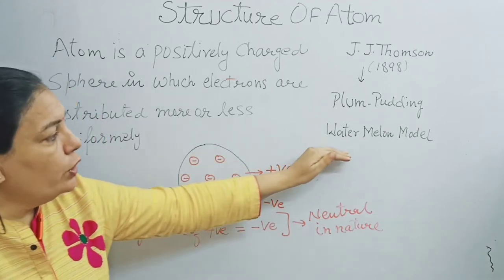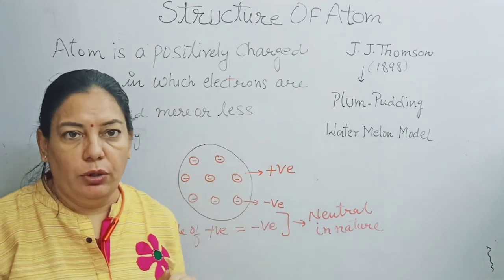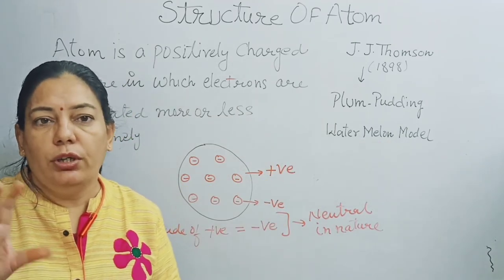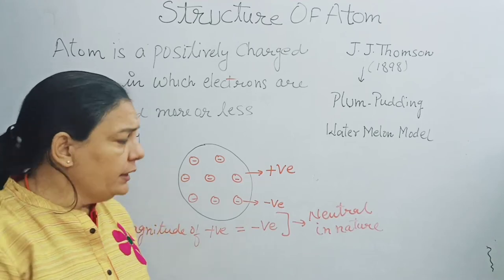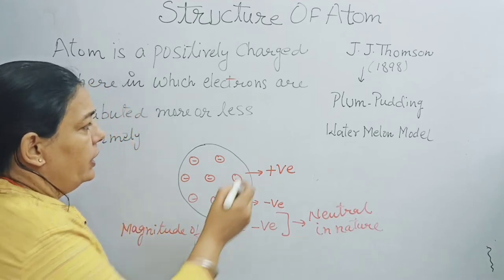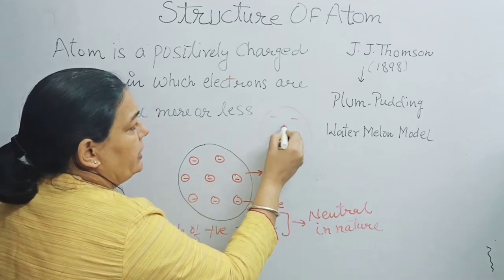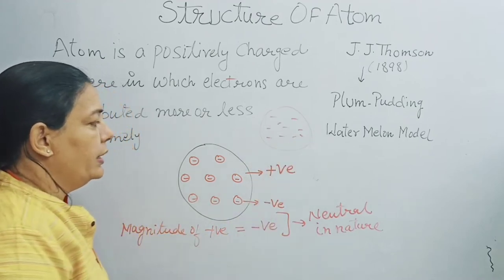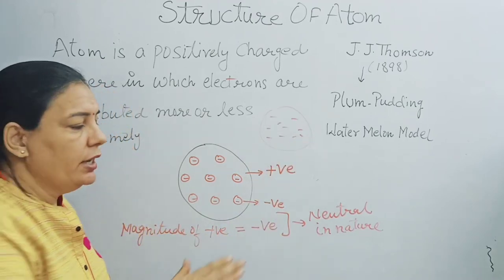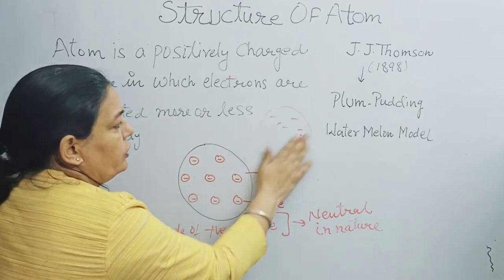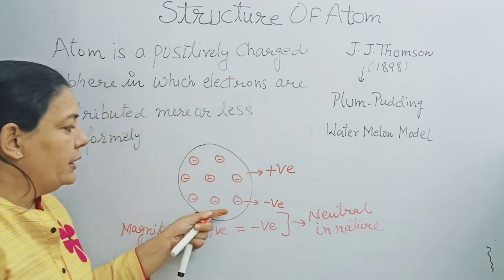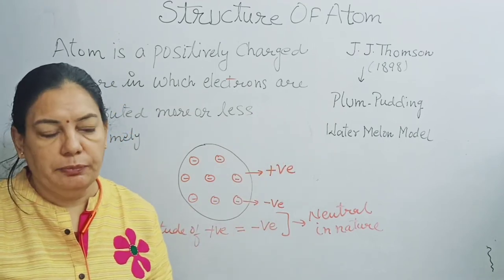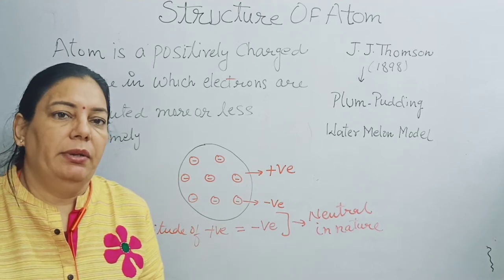Why is it called the watermelon model? If we look at a watermelon, it is a red-colored sphere. Inside the red sphere, seeds are distributed. Thomson compared the positive charge to the red sphere and compared the seeds to the electrons, which are the negatively charged particles. So Thomson made this model based on his experiments.